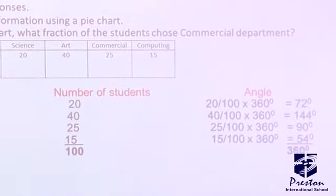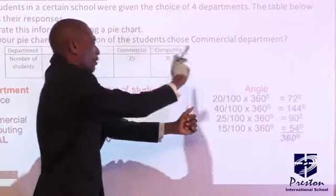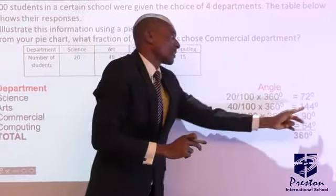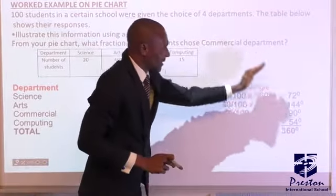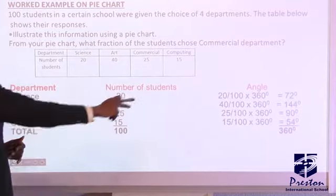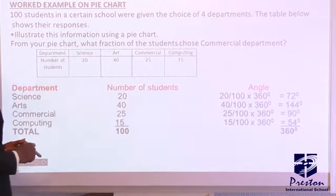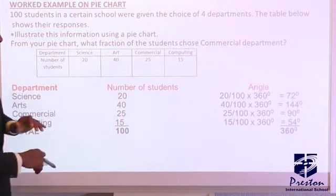For example, we go for the angle for art, which is 40 students, it means 40 over the total number of students, 100 times 360, 144. We did the same for every other thing, and then we got computing to be 54 degrees, and then commercial to be 90.